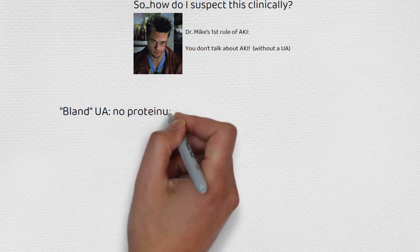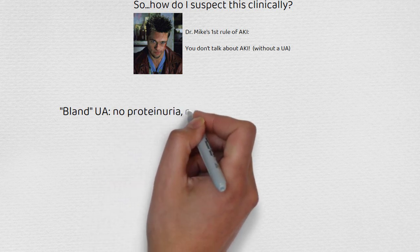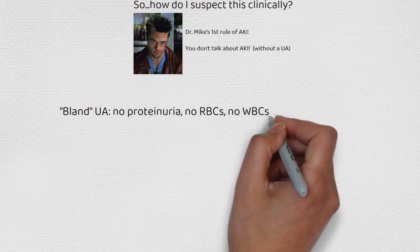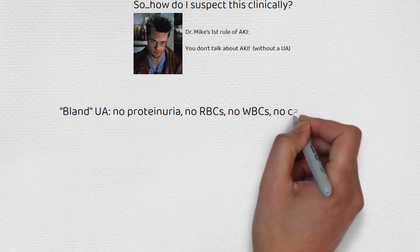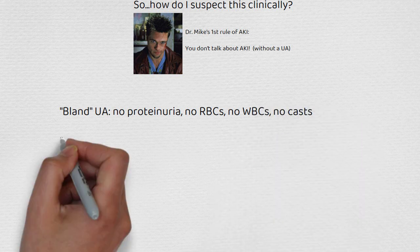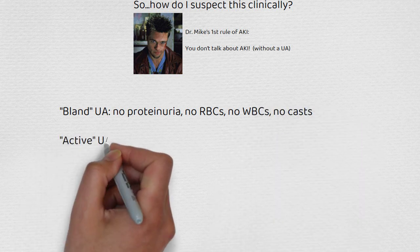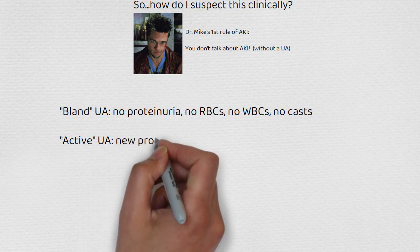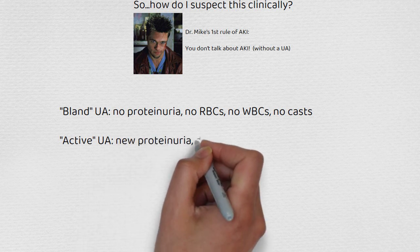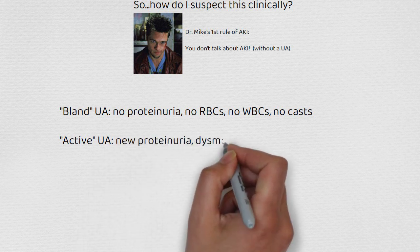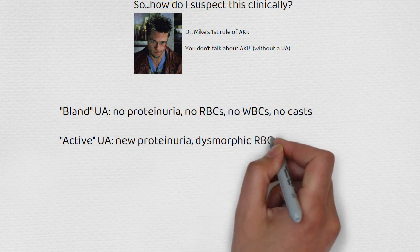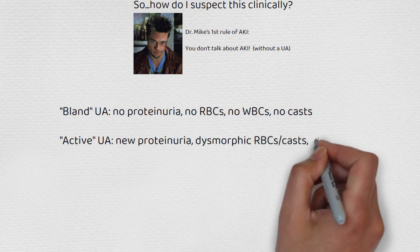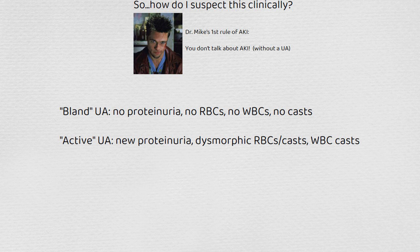When people refer to a bland UA, what they mean is that the biopsy shows no proteinuria, no red cells, no white cells, no casts. When it's active, what this is saying is that there's something wrong in the glomerulus — there's new proteinuria, the cells are dysmorphic because they're allowing RBCs through freely, and finally, WBC casts.